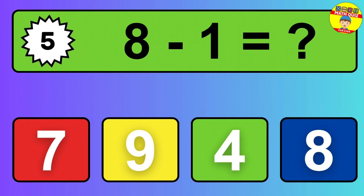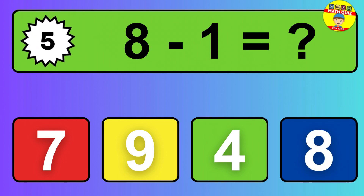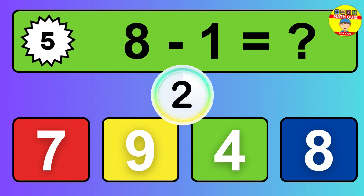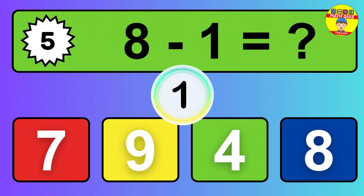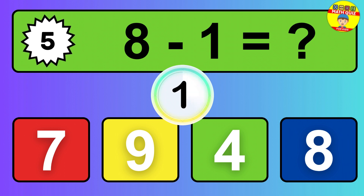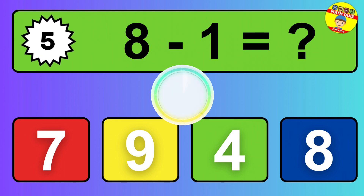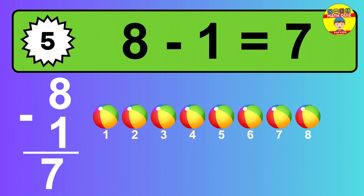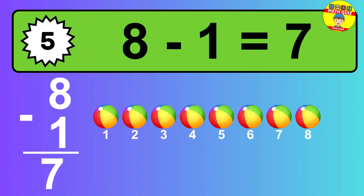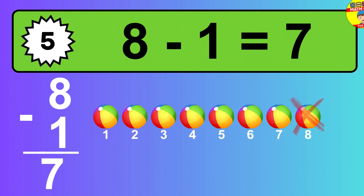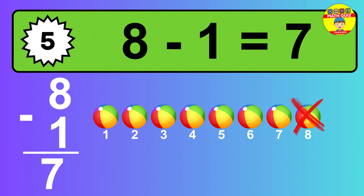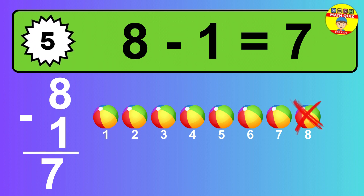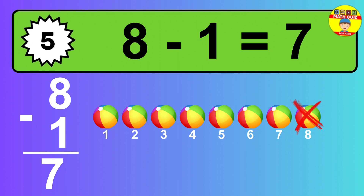Question 5. 8 minus 1 equals what? The answer is 8 minus 1 is 7. Let's count it. 1, 2, 3, 4, 5, 6, 7.